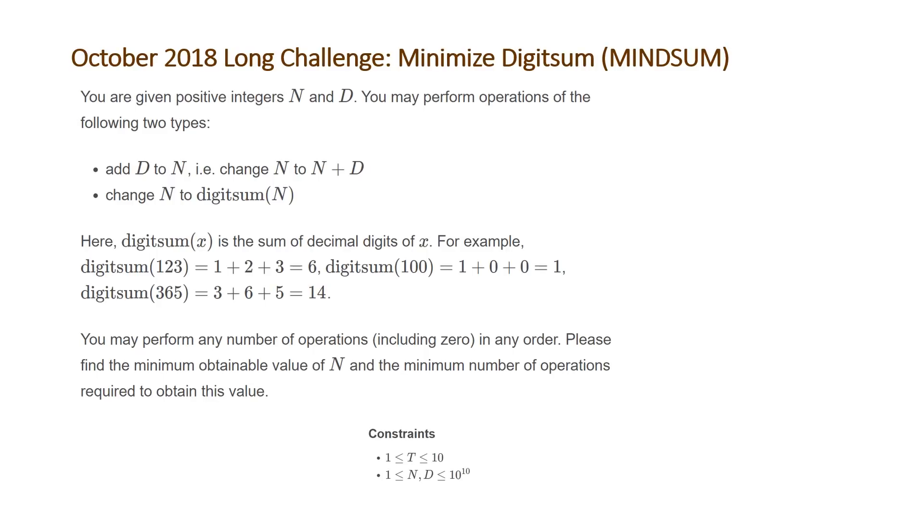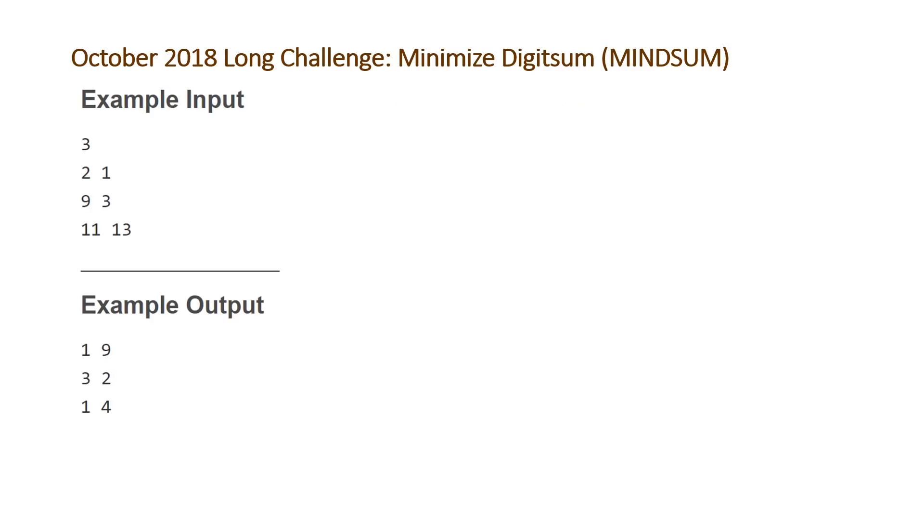So let's take a look at the examples that Codechef provided us with. So here we have three examples, n and d are given on the three lines that follow 3, which is t, and then our output for these three should be the following.